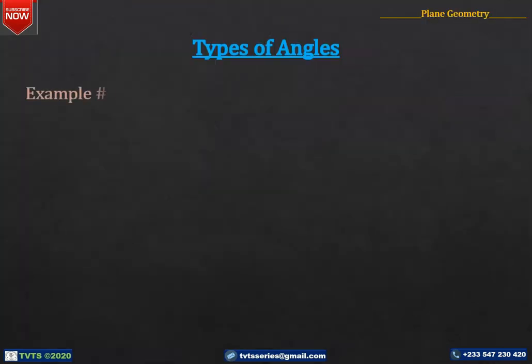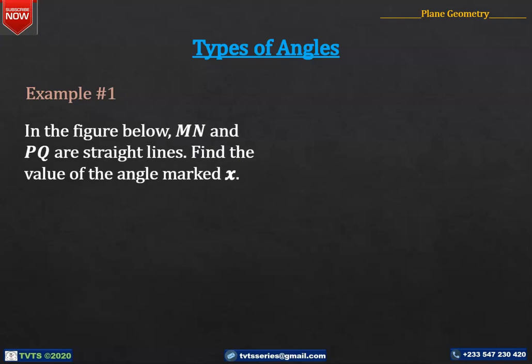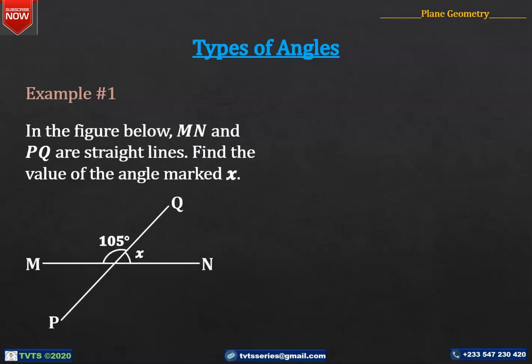Example number one. In the figure below, MN and PQ are straight lines. Find the value of the angle marked X.